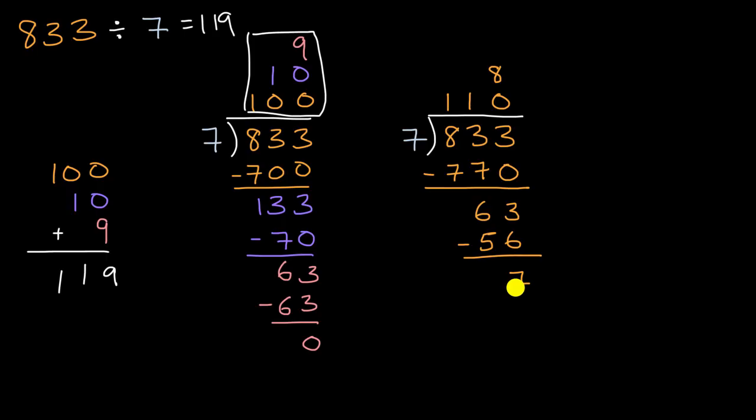and then 63 minus 56 is exactly seven. And you say, look, I can go one more time. So I'd write that up there. And so one times seven is seven. And then you see, we have nothing left over. So we are done.